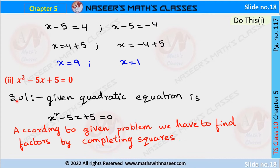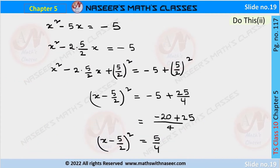The second problem is: x² - 5x + 5 = 0. We solve this quadratic equation by the completing the square method. First, we transpose the constant term +5 from LHS to RHS, giving us x² - 5x = -5.